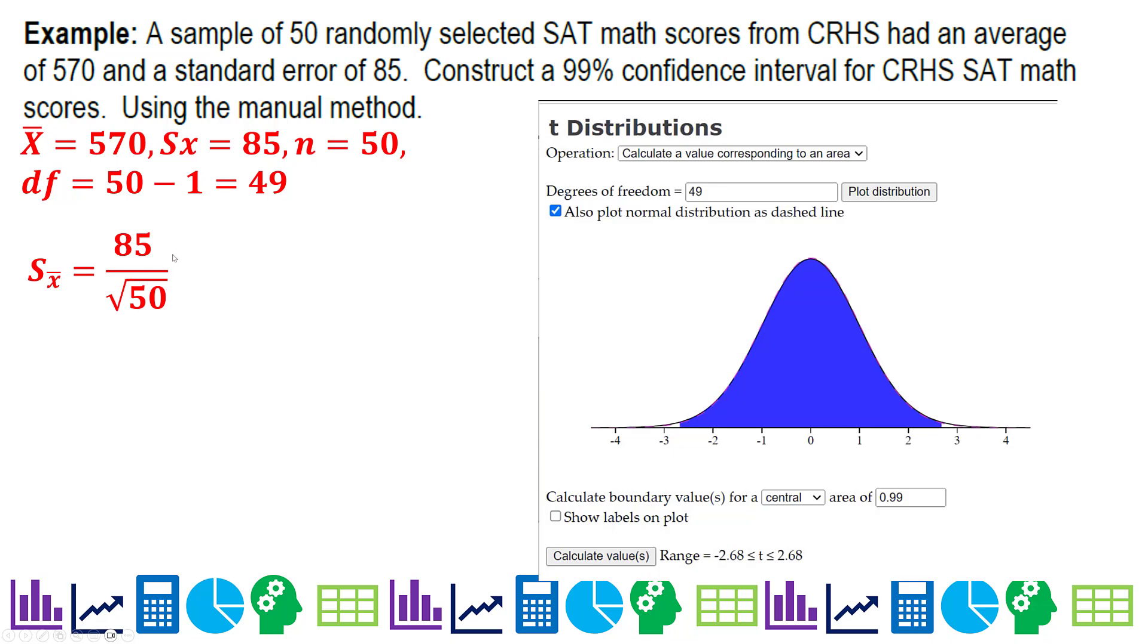So we're going to calculate our standard error for the sample. This is standard deviation for the population or standard error based on the sample, but now we have to create one for our confidence interval, which means we have to include the sample size. So we take 85 divided by the square root of N, and there's the critical value that we just found.